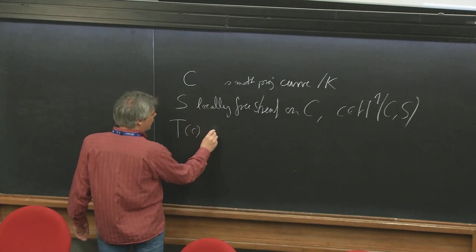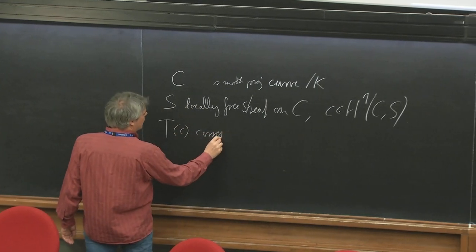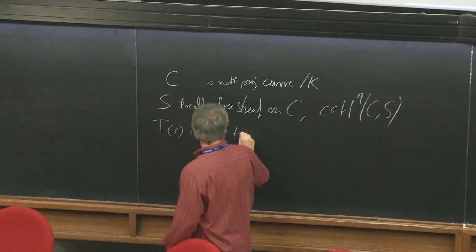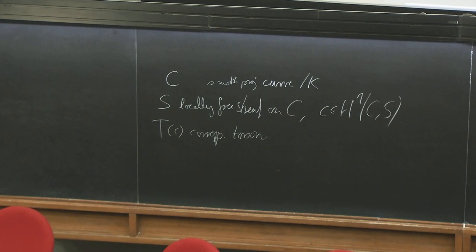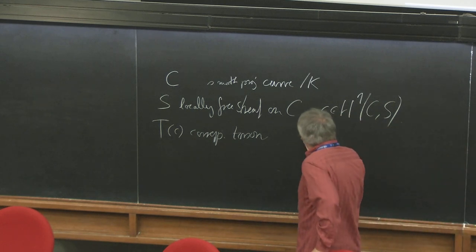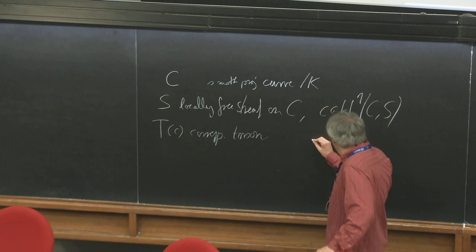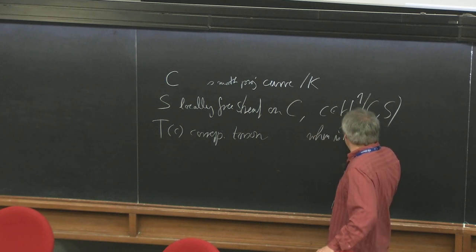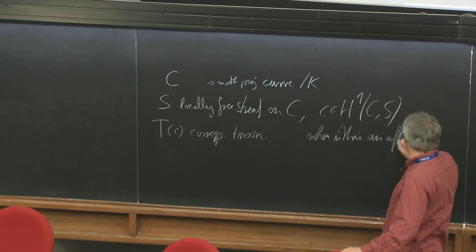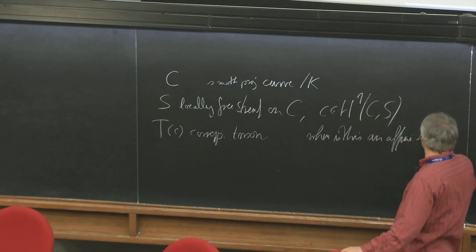This gives rise to a torsor. TC is the corresponding torsor, which is an affine linear bundle. The fibers are affine spaces, but the transition maps are affine linear, not linear, as in the case of a vector bundle. The question we are dealing with is when this is an affine scheme.